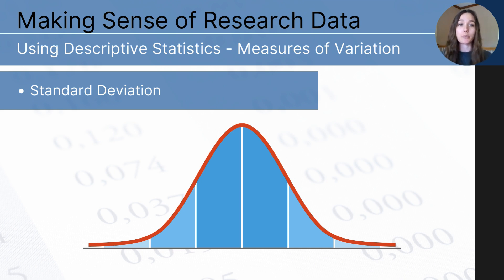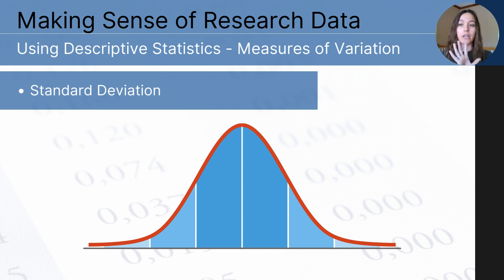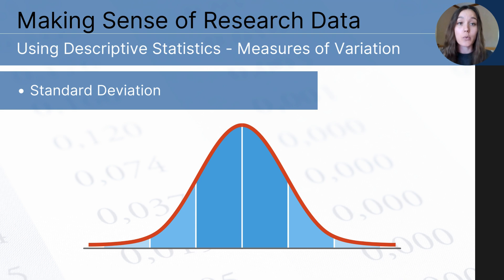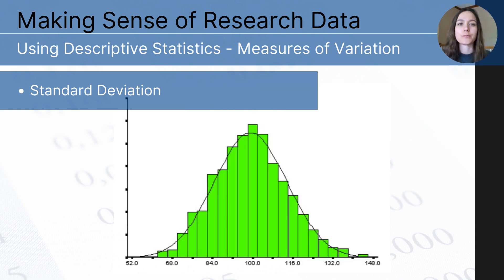Standard deviation uses a formula that considers all values and the mean — it involves adding up the squared differences between each value and the mean, then taking the square root of that sum. But AP Psychology students won't need to calculate it; you should just know what standard deviation means, how it helps us better understand our data set, and what it looks like visually on a distribution curve.